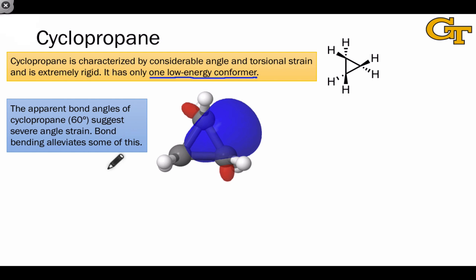Cyclopropane looks like it suffers from horrible angle strain because of its apparent bond angles of 60 degrees. But in actuality, the situation isn't quite as bad as it looks.